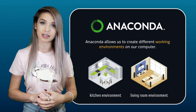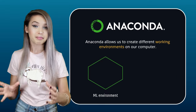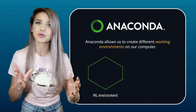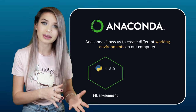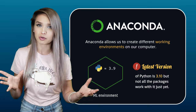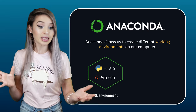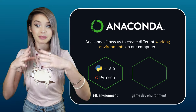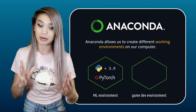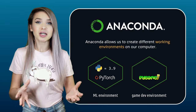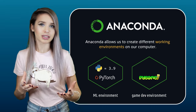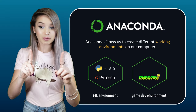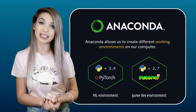Same goes for working environments. One environment may represent the machine learning room, where it is very common to install the latest version of Python, along with the newest and most advanced modules, such as PyTorch. While another environment may represent the game development room, where we are planning to work with PyGame, which is a very old library, so we will also need an older version of Python — more specifically, Python 2.7.